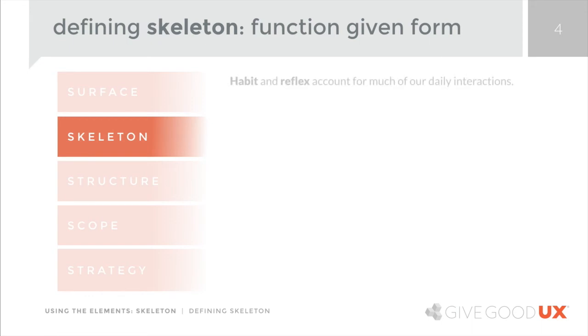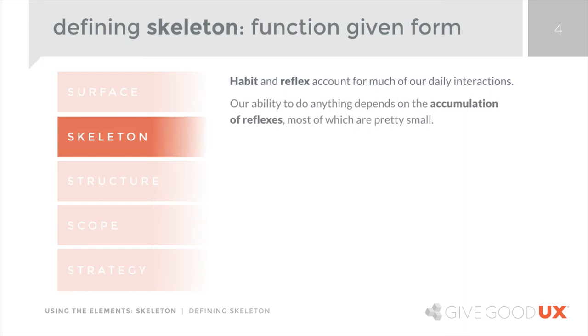In order to design anything successfully, you have to have a strong understanding of conventions. That's largely because habit and reflex account for much of our daily interactions. The ingrained habits we have, the automatic unconscious reflexes, the way that we react to things, make up a large portion of our everyday actions. Without habit and without reflex, we pretty much wouldn't be able to do anything — from the way you get out of bed groggy and somehow manage to make coffee, even though you're not really conscious of doing it, to the common things you do every time you pick up your phone or tablet or open your laptop.